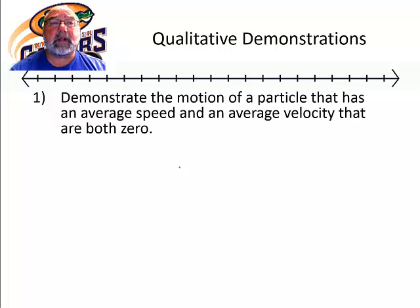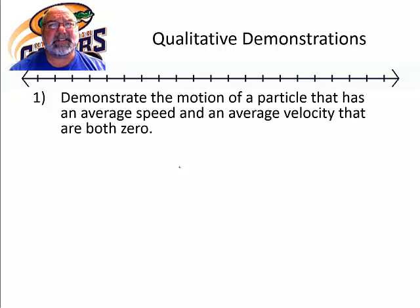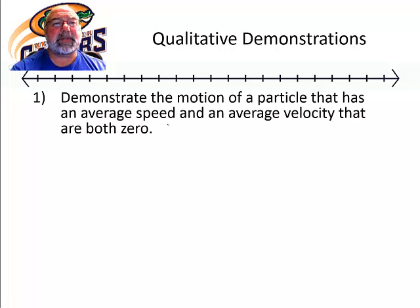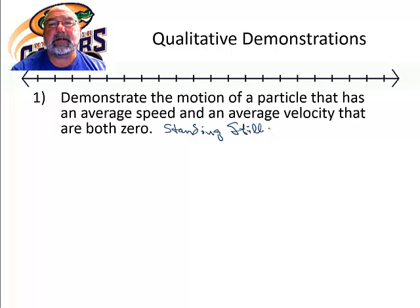We're going to do a couple of qualitative examples. First, we're going to demonstrate the motion of a particle that has an average speed and an average velocity that are both zero. If you have no distance and no displacement in a period of time, what does that mean? That would mean that we're standing still — or, as we describe it in physics, at rest. We're not moving.